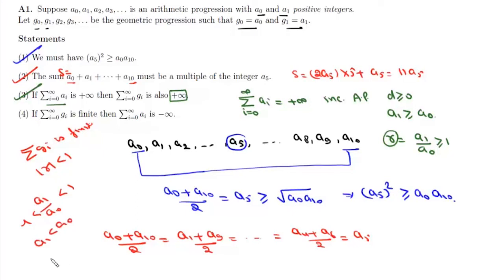Now if a1 is less than a0, then basically the common difference is less than 0. And if the common difference is less than 0, then the sum of infinite terms of an AP will be minus infinity. That means statement 4 is also correct. So all the 4 statements 1, 2, 3, 4 are correct.